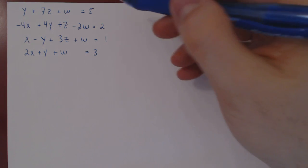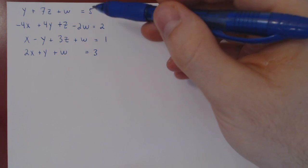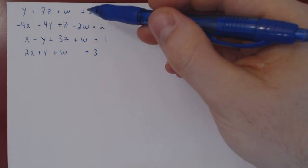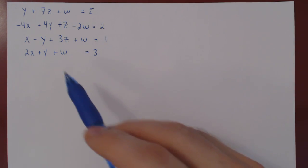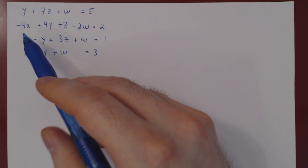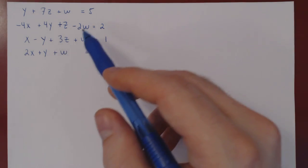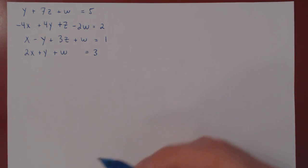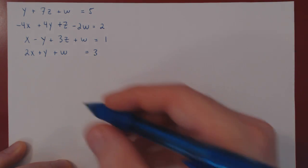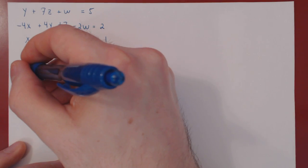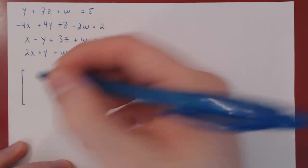In this video, we will solve a linear system that consists of four equations and four variables: x, y, z, and w. As always, the first step is to construct the corresponding augmented matrix.